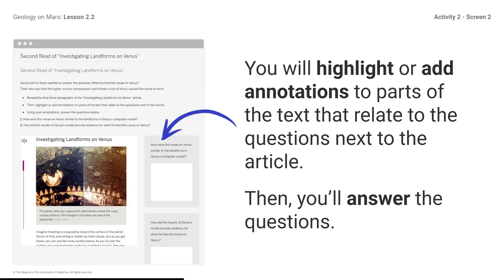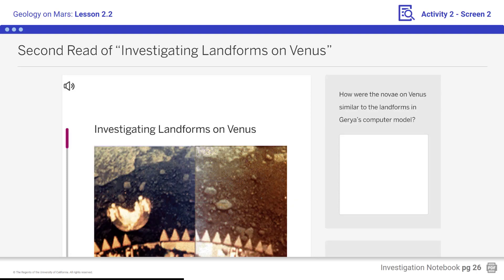You will highlight or add annotation to parts of the text that relate to the questions next to the article. Then you will answer the questions. Re-read the final three paragraphs of the article. You can highlight and add notes to the excerpt while we re-read. Remember to use your annotations to answer the questions on your screens after you are done reading.